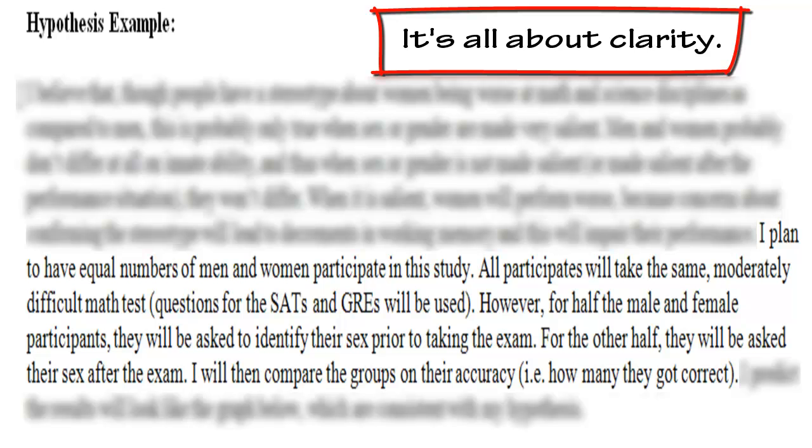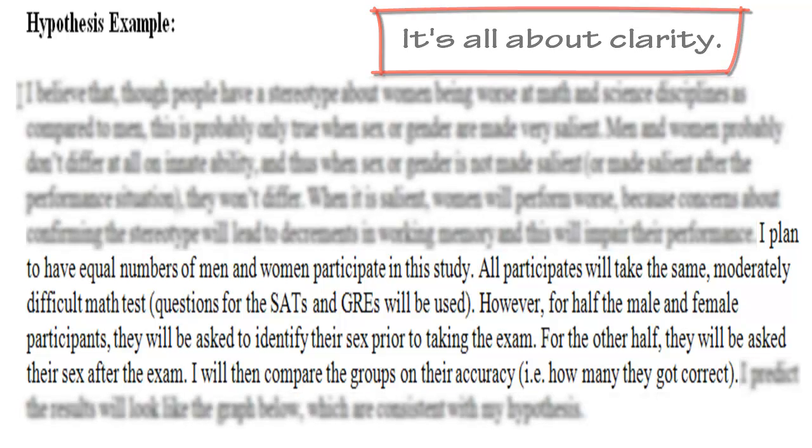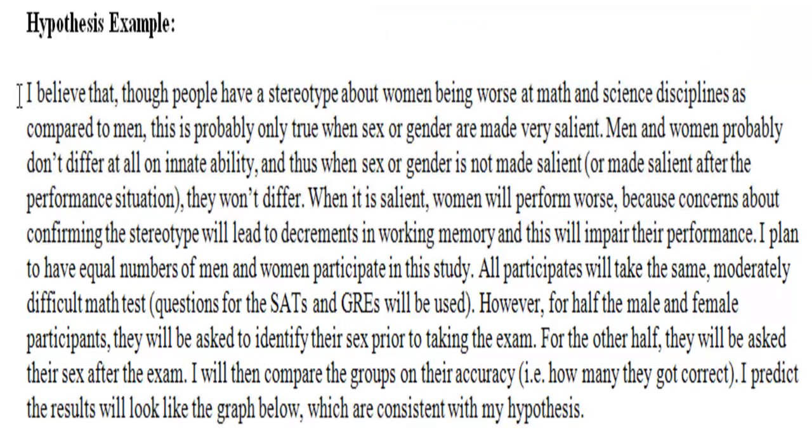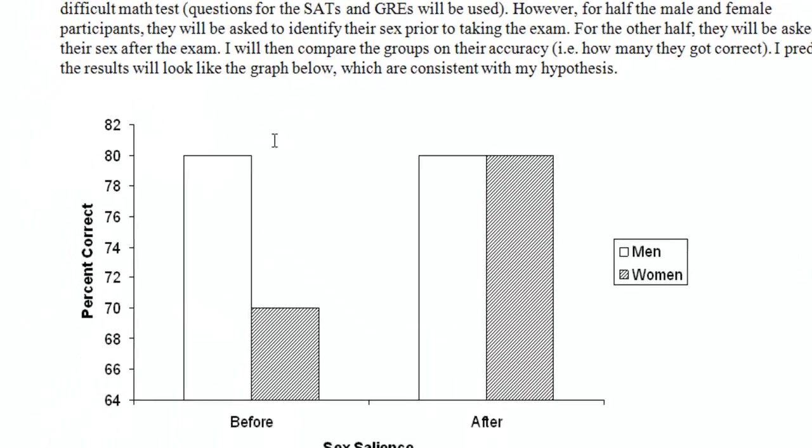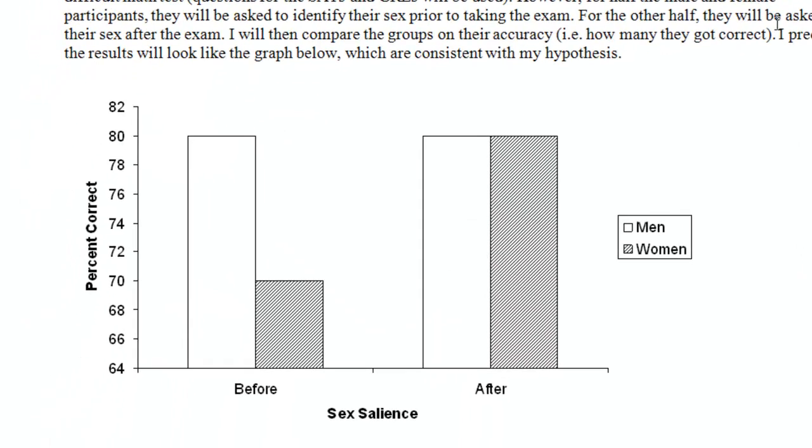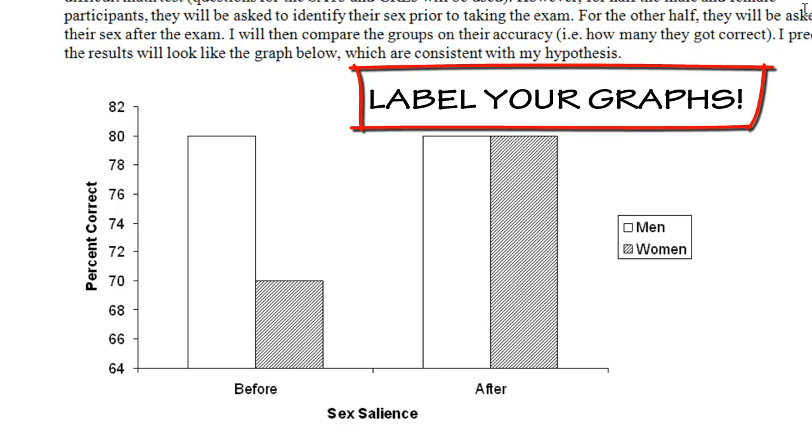Ideally, all of you reading this can have a general idea of how to do the exact same experiment just based on what was read. And then I predict the results will look like the graph below, which are consistent with my hypothesis. So we can look at this graph. There's another video on how to make these kind of graphs. We can see that along the y-axis, which is labeled, it says percent correct. The x-axis, which is labeled as sex salience, whether it was before or after. And the bars are different colors, indicating whether or not they're men or women.